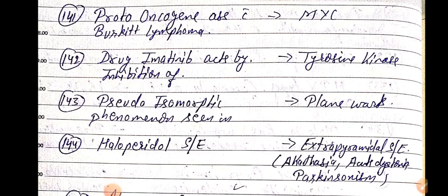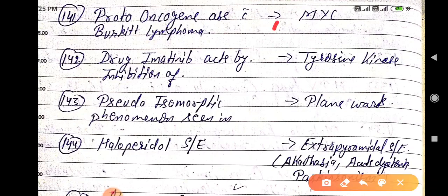Good evening doctors, welcome again. Today we are going to discuss NEET PG 2021 important one-liners — this is part 15. Proto-oncogene associated with Burkitt lymphoma is MYC. The MYC gene is associated with Burkitt lymphoma.